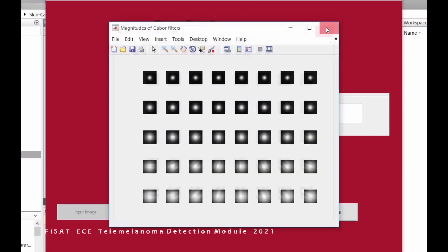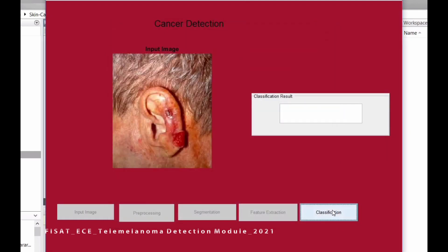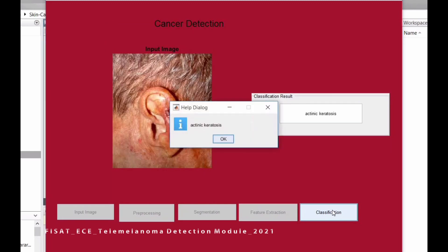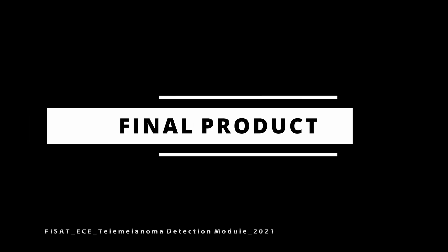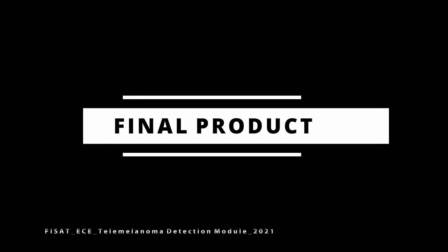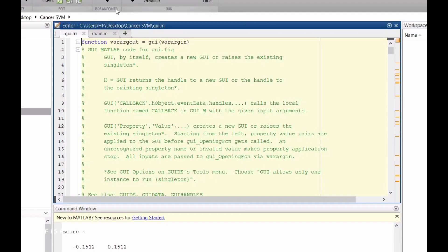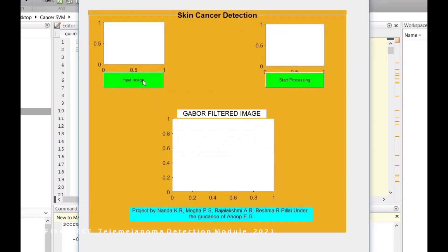Here shows the real part and magnitude part of feature extraction, classified using Gabor filter and SVM classifier respectively. The result shows actinic keratosis. Now let's see the final product.